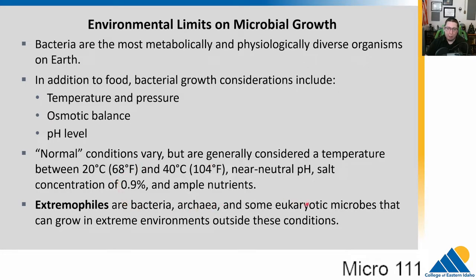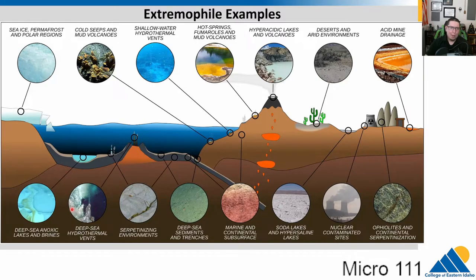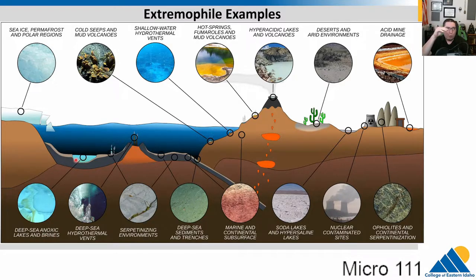There are plenty of bacteria, archaea, and even some eukaryotic microbes that prefer conditions outside this range. We call those extreme environments, and the organisms that love them are extremophiles. You can find extremophiles in frozen ice, deep sea lakes with zero oxygen and very salty brine — those underwater lake images you may have seen as a scuba diver — and in deep sea hydrothermal vents with no light.